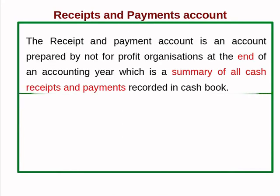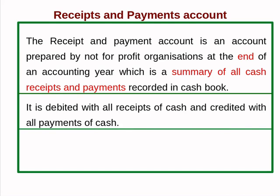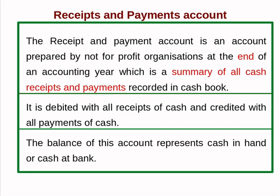The receipt and payment account is an account prepared by not-for-profit organizations at the end of an accounting year, which is a summary of all cash receipts and payments recorded in the cash book. It is debited with all receipts of cash and credited with all payments of cash — that is, the debit side contains cash and bank receipts, and the credit side contains cash and bank payments.